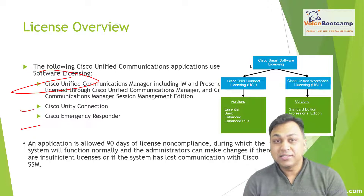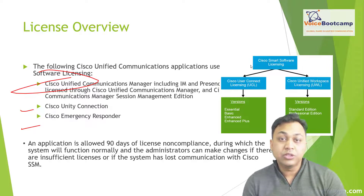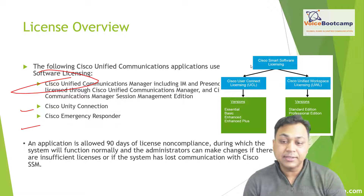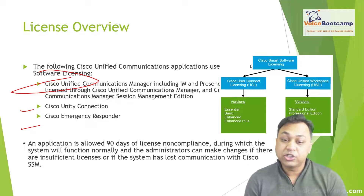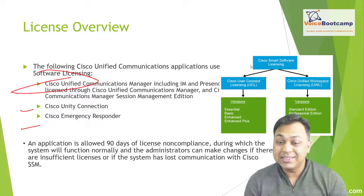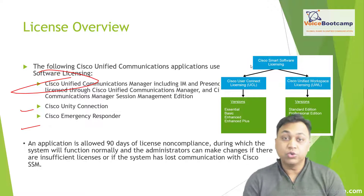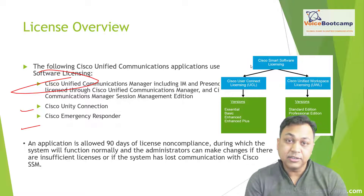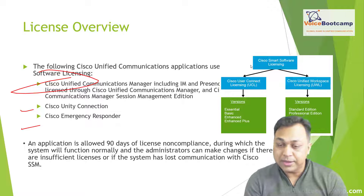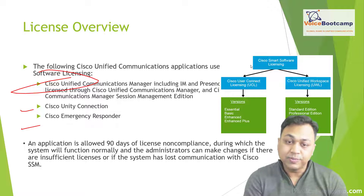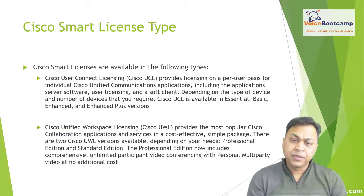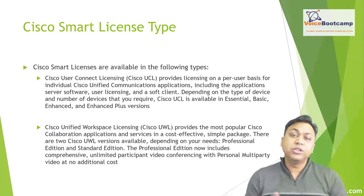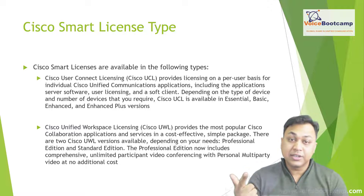An application is allowed 90 days of license non-compliance, meaning you get to use the software for 90 days without having to acquire a license, during which the system will function normally and an administrator can make changes. This applies if there is insufficient license or if the system has lost communication with the Smart License Manager.